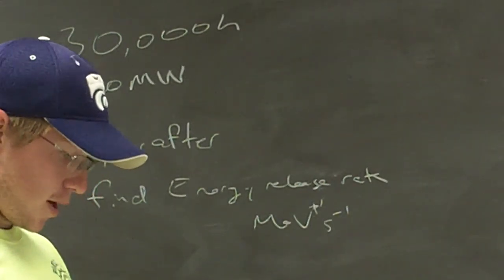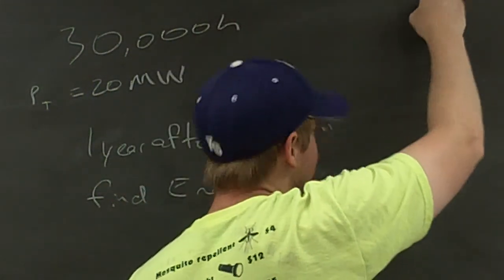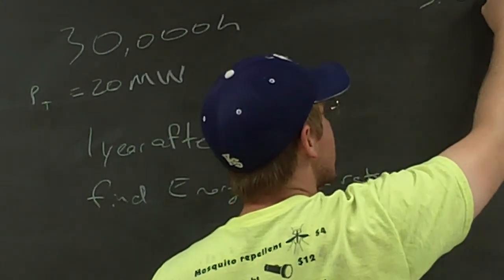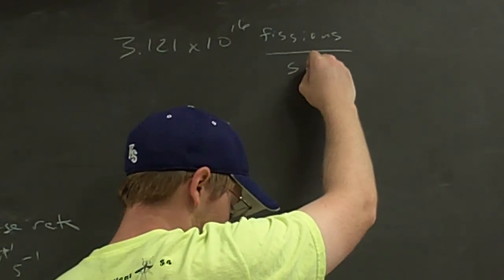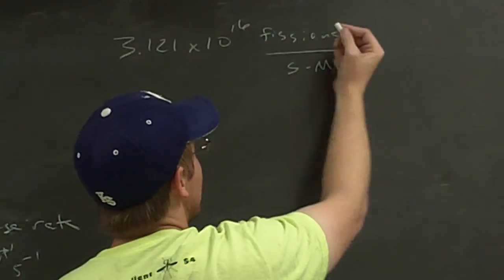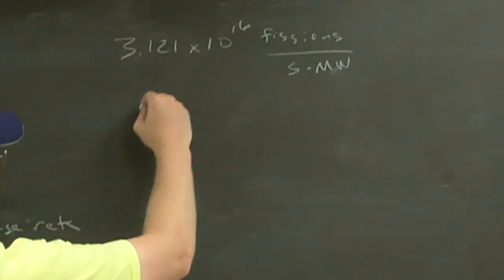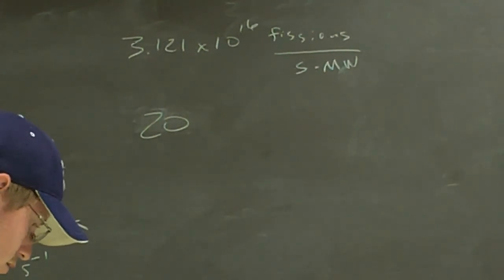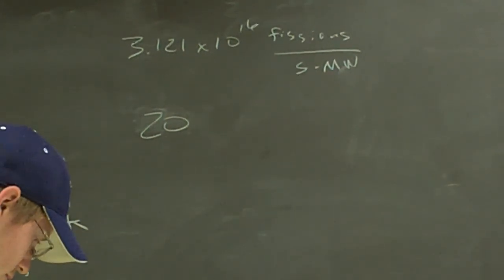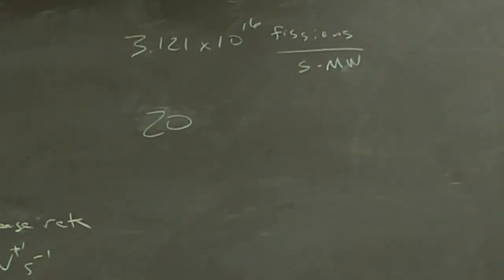For the gamma and x-ray photons emitted from fission products, you can find that there's 3.121 times 10 to the 16 fissions per second per megawatt of thermal power. Where do we find that? Somewhere in Appendix G. I got page 99 footnote. That may very well be out of the 485 book.